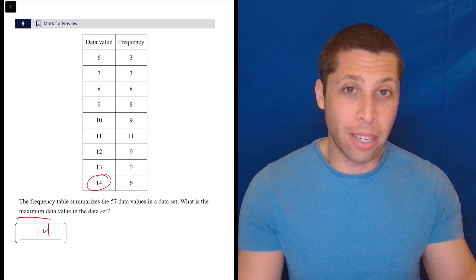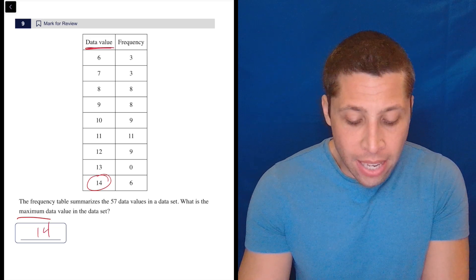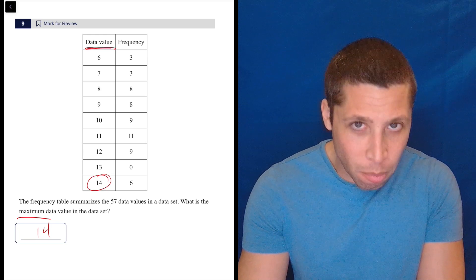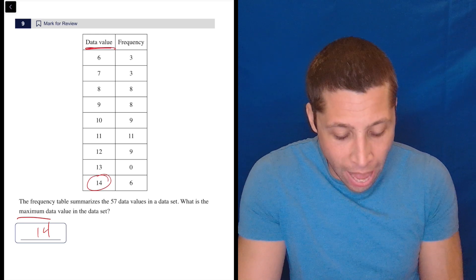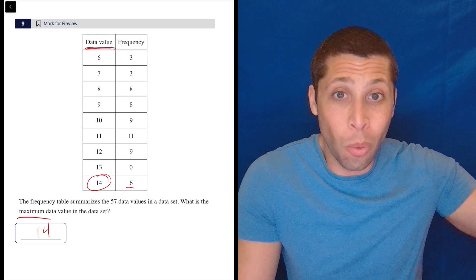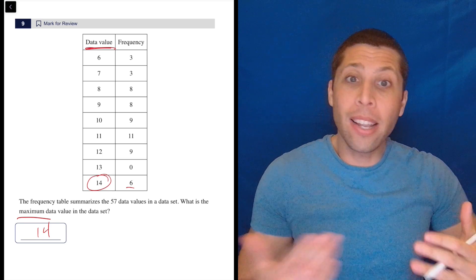Why is that the maximum data value? Because it says data values at the top and that's the maximum number. That's the biggest one. And we know that there's at least one 14. There's six in this set.